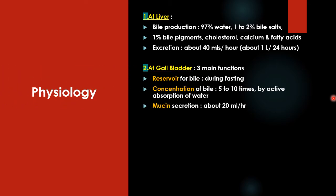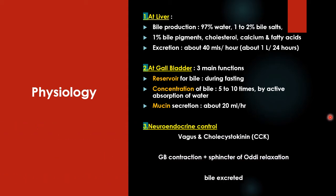At the gallbladder, three main functions take place. First, it acts as a reservoir for bile storage during fasting when bile is not required. Second, it concentrates bile up to 5 to 10 times by active reabsorption of water. Third, it produces mucin at around 20 ml per hour to lubricate the gallbladder. Neuroendocrine control is dependent on the vagus nerve and cholecystokinin (CCK). When food enters the duodenum, the vagus and CCK contract the gallbladder and relax the sphincter of Oddi, resulting in bile excretion into the duodenum.